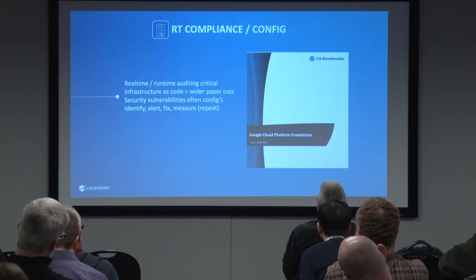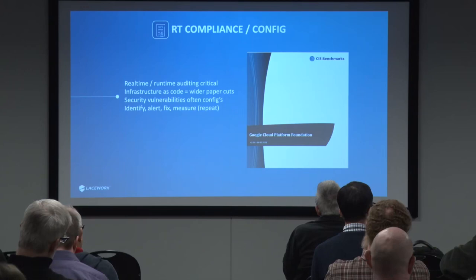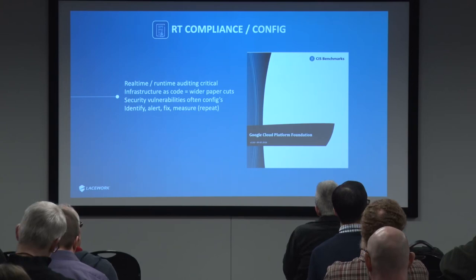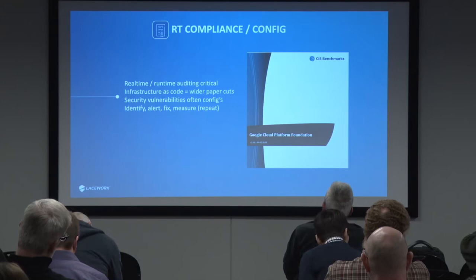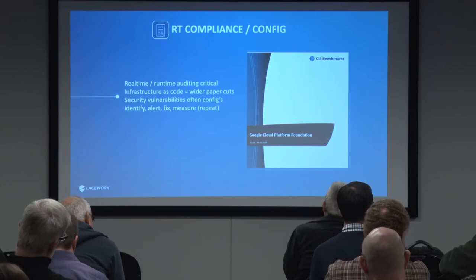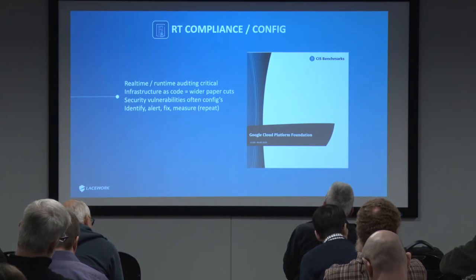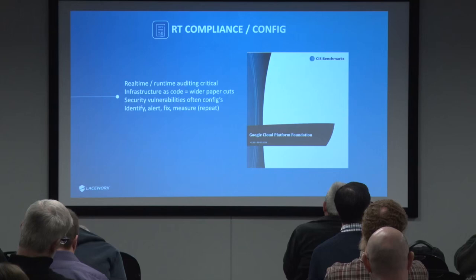Number nine is real-time compliance and audit config. Compliance used to be boring — auditors arriving with irrelevant checklists. But when infrastructure is code, things change really quickly, and developers can program everything rapidly. Most of the problems we see are config and audit changes that were made without anyone realizing. The ability to look at those in real time is critical — not semi-annual, but hourly or real-time review of all your configurations. Look at the CIS benchmarks — there's one for Kubernetes specifically, one for GCP, AWS, and Azure. It's also a nice report you can hand to auditors to demonstrate compliance.